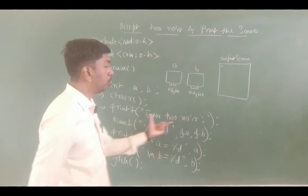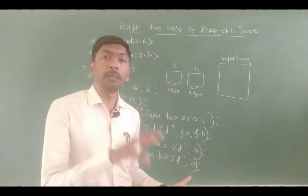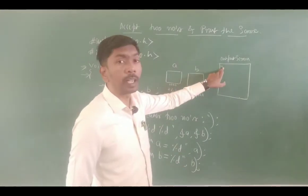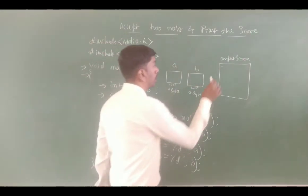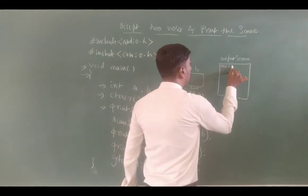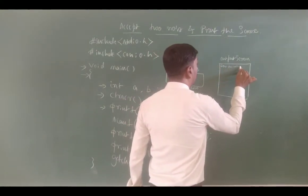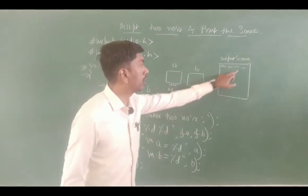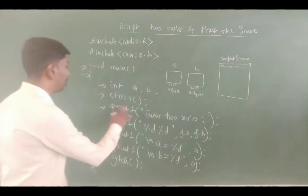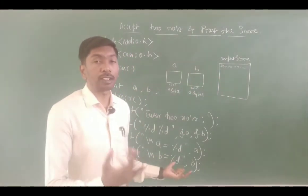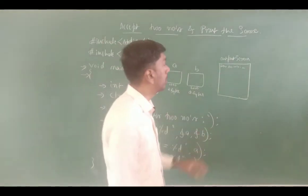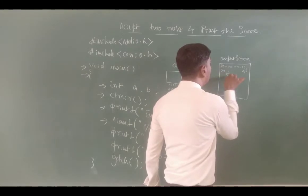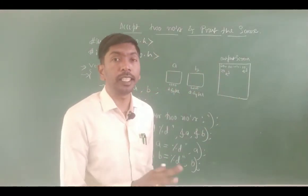Next, printf prints "Enter two numbers" on the output screen. The cursor is at the top-left. Then scanf is executed — you type 10, press enter, then type 20, press enter. Scanf reads these values.